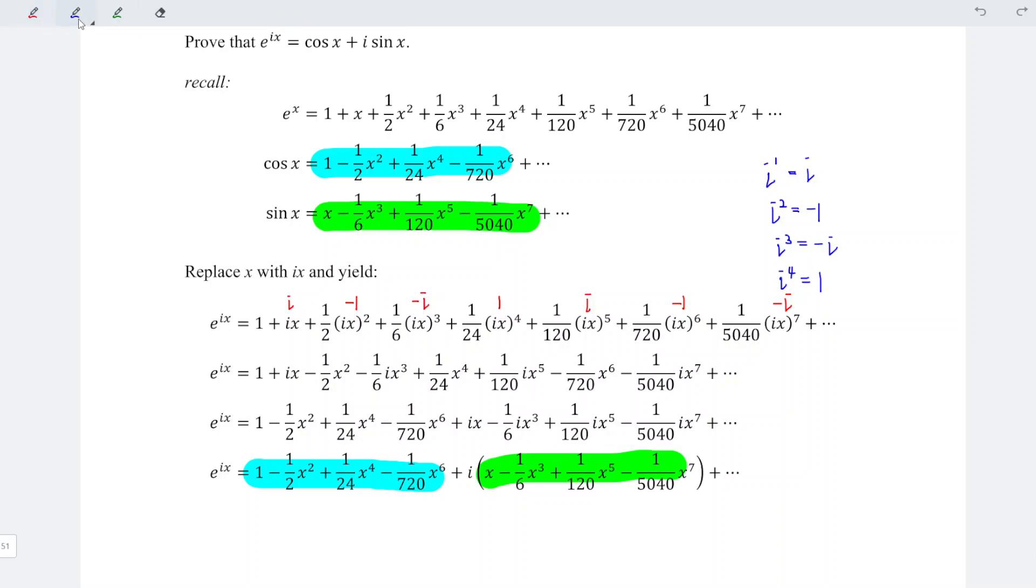In other words, e to the power of ix is actually cos x plus i sin x. And hence we already proved Euler's formula. That's all for this video. Thanks for watching. Hope you like this. See you.